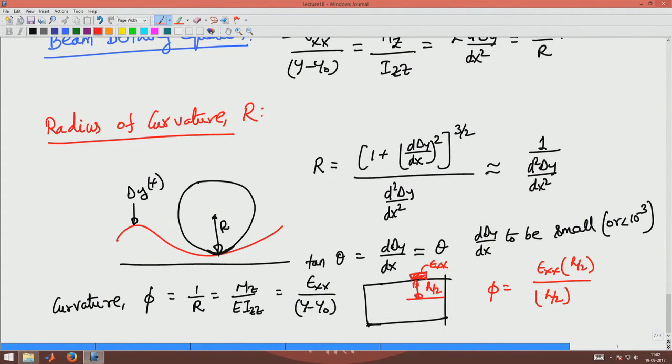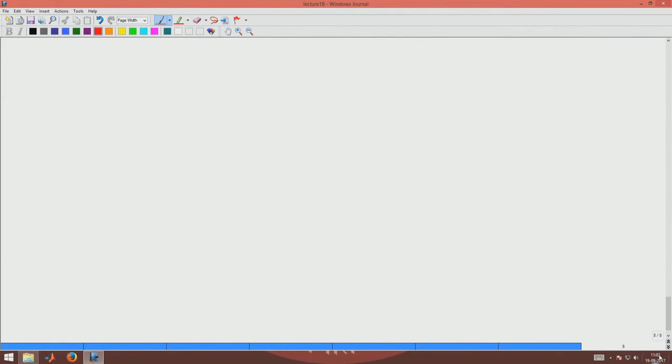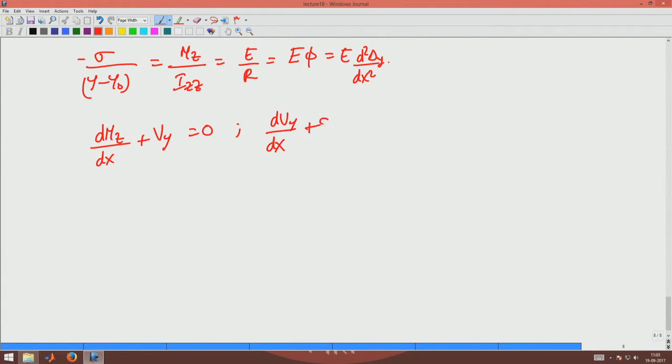To summarize what you have seen in today's lecture: we have found the bending equation for the stresses. The bending equation is given by -σ/(y - y₀) = Mz/Izz = E/R = E·φ = E·d²Δy/dx². And then we have two more governing equations: dMz/dx + Vy = 0, and dVy/dx + Qy = 0.